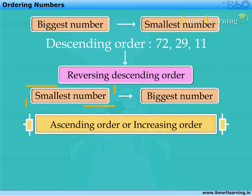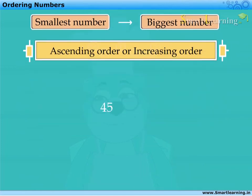Thus, from the smallest to the biggest number, they can be written as 11, 29, 72. Similarly, in 45, 31 and 84,